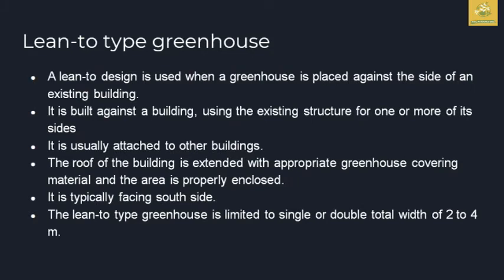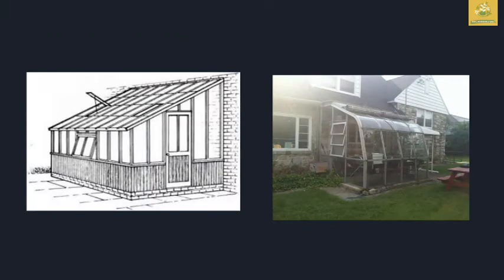First, let's talk about the lean-to type. Looking at the picture, this greenhouse has a permanent structure — a building or any other terrace — on one side. This is the permanent structure. If this is a single-bay greenhouse, it can also be a double-bay greenhouse. The greenhouse is located on the south side.